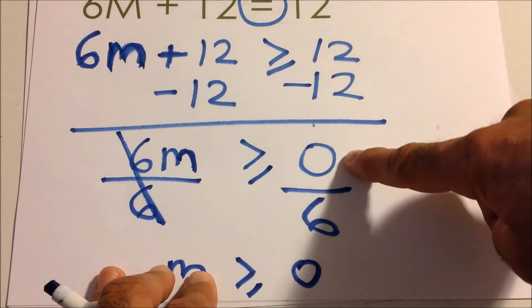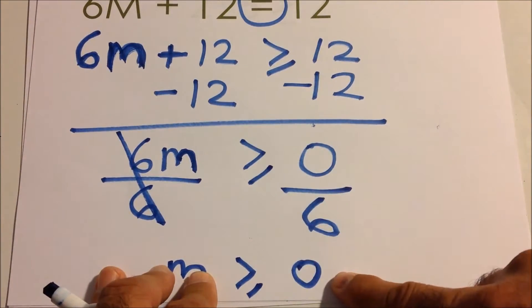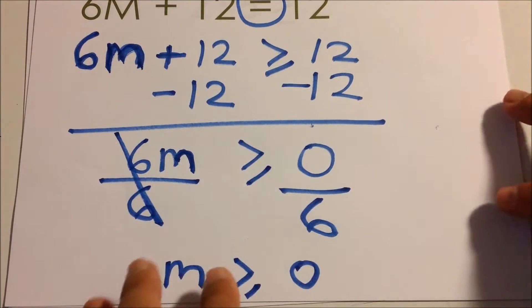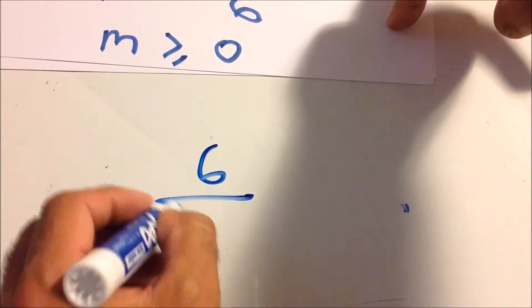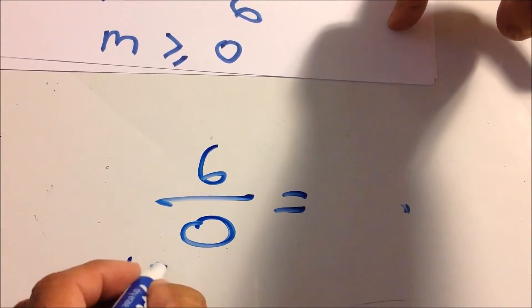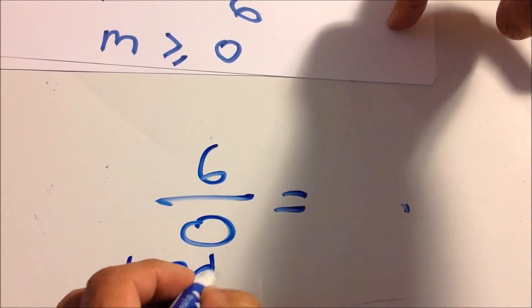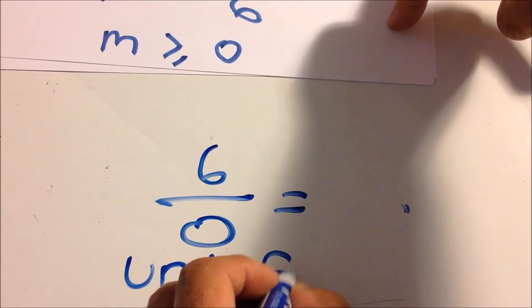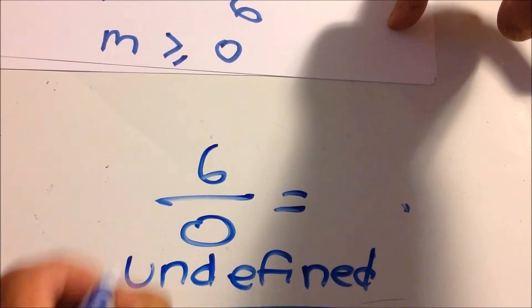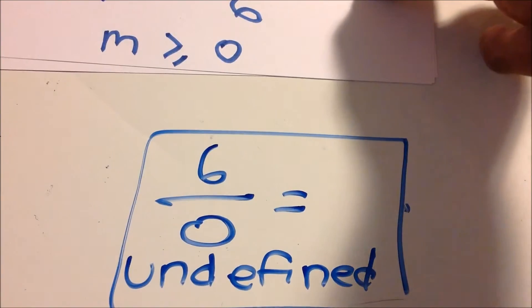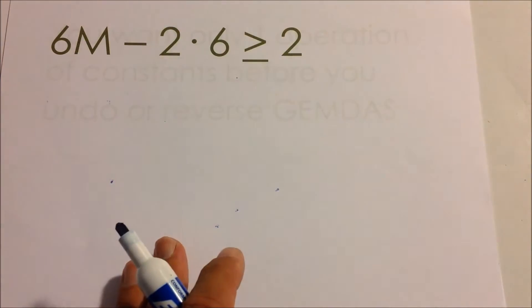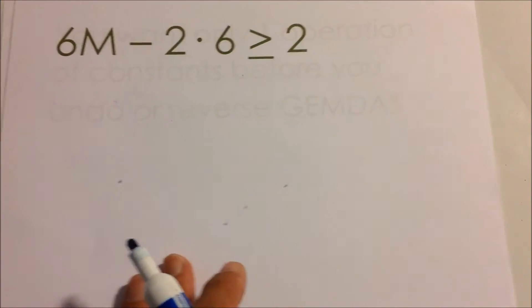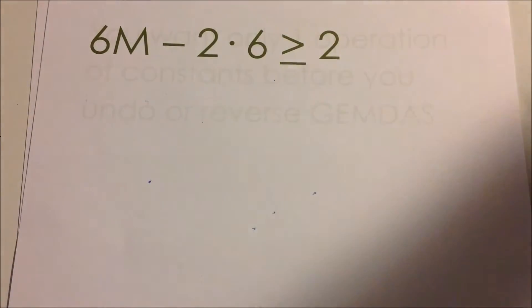There are no negatives so we're not flipping the sign. We can now unglue — do the opposite of multiplication, which is division — and m has to be greater than or equal to 0. Remember: if you have a zero on top the answer is zero, but if you have a zero on the bottom it's undefined. You cannot have a zero in the denominator.